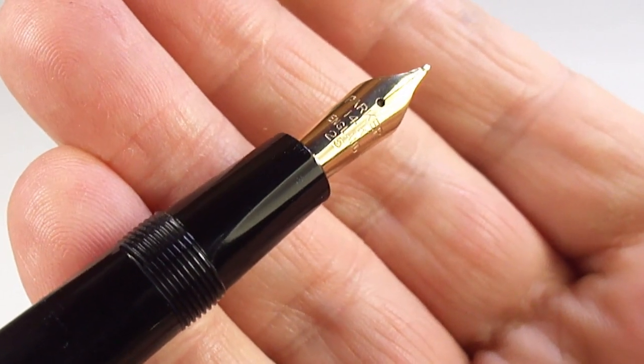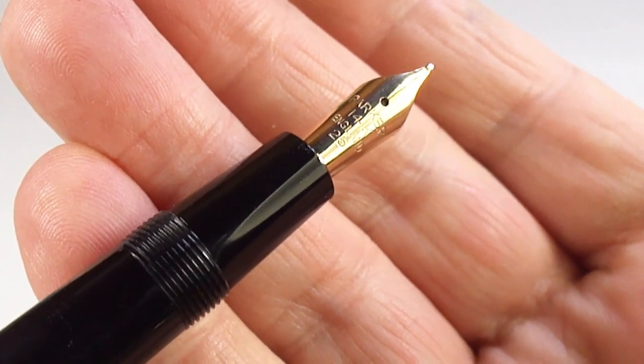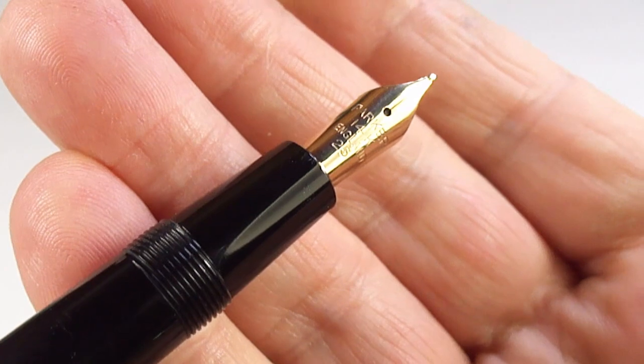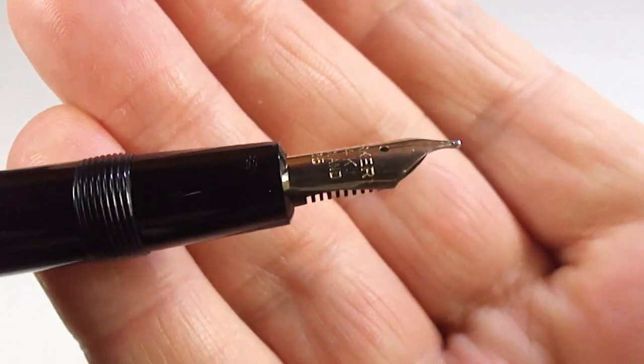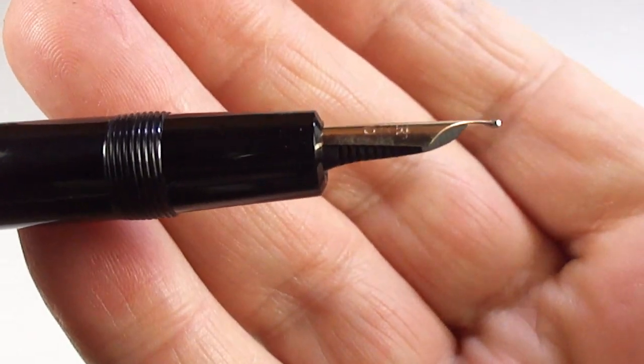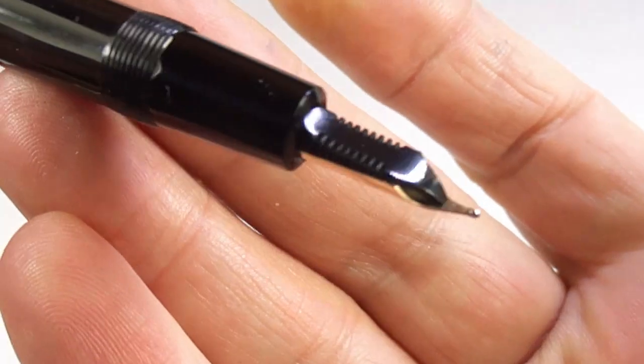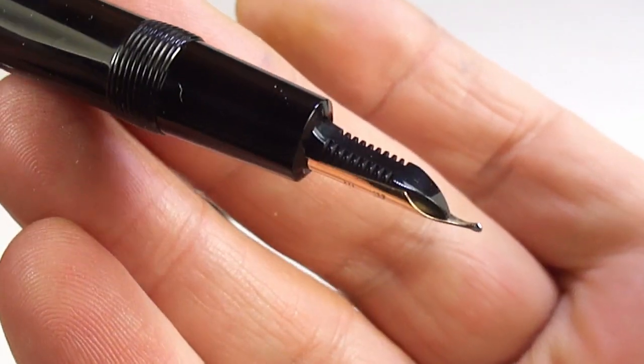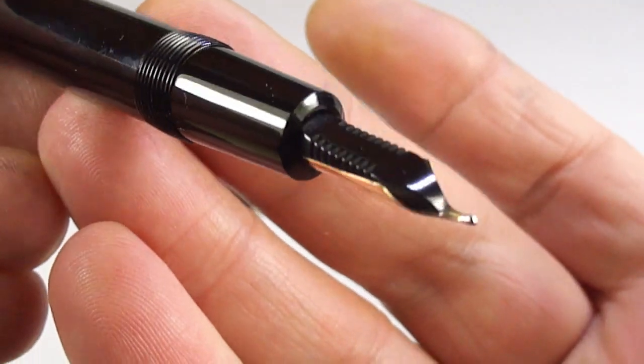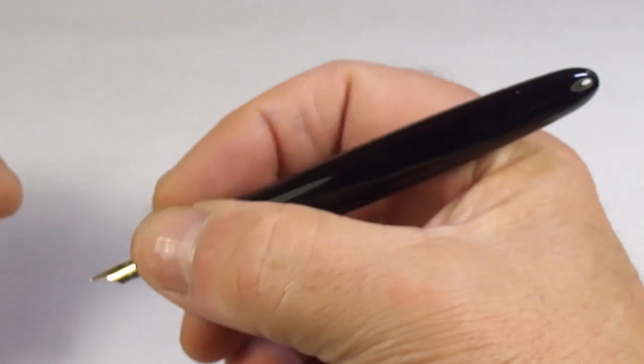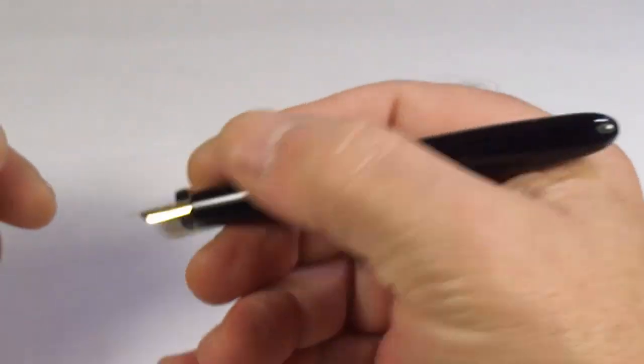And that is indicating that this model is what they term as the standard model. There's a sideways view. The feed underneath. Again, everything is lovely and clean. Everything's been cleaned. And again, a lovely pen to write with.